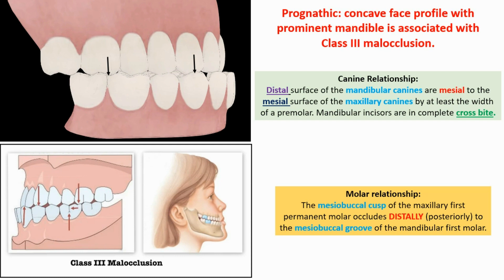Mandibular incisors are in incomplete crossbite. The line of occlusion is not specified but irregular, depending on facial pattern, overcrowded teeth, and space needs.